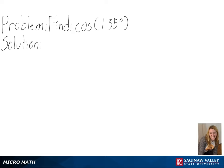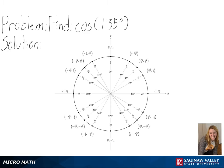Our problem is to find cosine of 135 degrees. To solve this, we will be using a unit circle, so we will start at 1,0 and then move counter-clockwise until we have rotated 135 degrees.